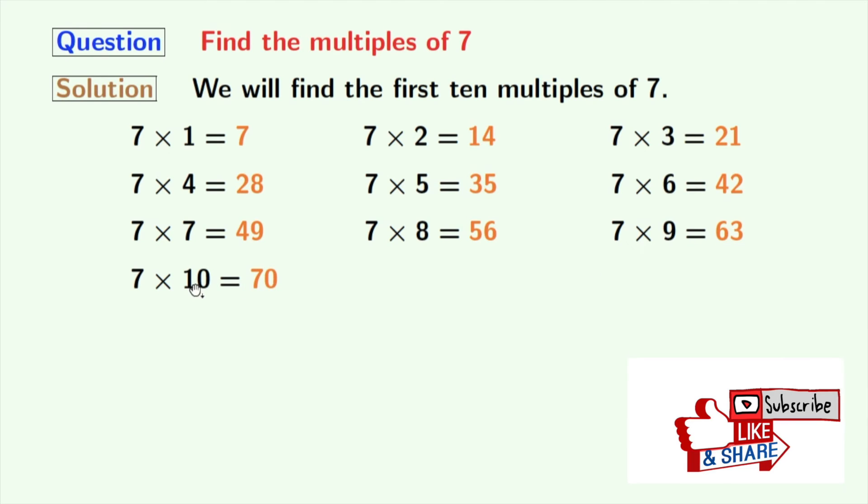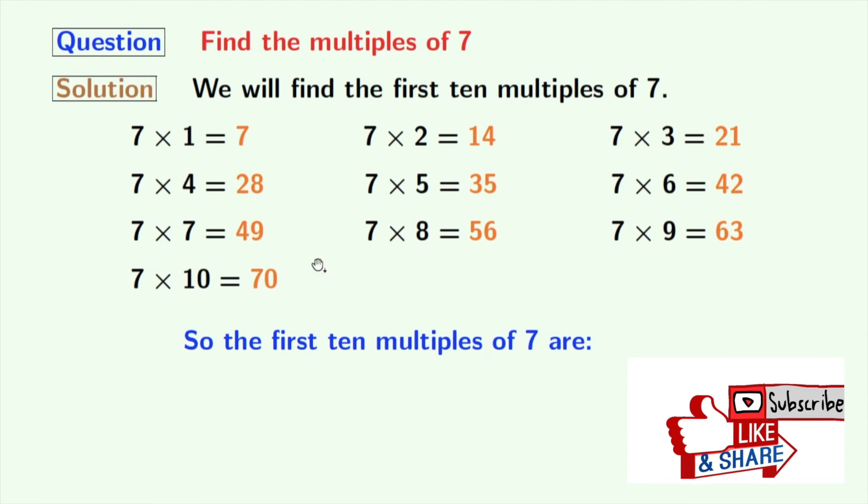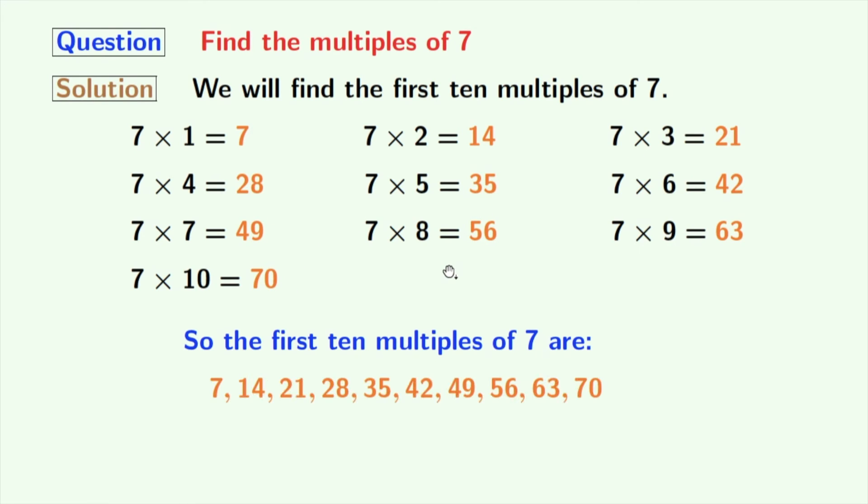Multiplication of 7 and 9 gives us 63. And multiplication of 7 and 10 gives us 70. Now, we have obtained all the first 10 multiples of 7, which are the orange ones.